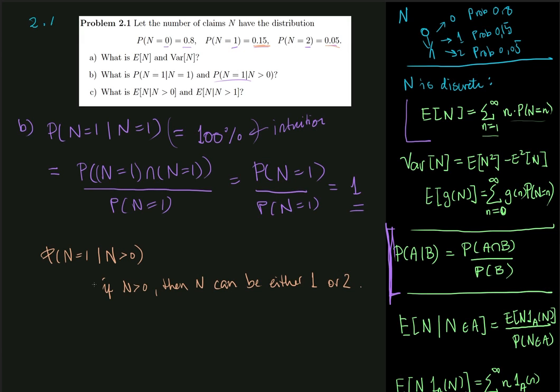But let's just try to do this mathematically. So the probability that N is equal to 1, given N is greater than 0, using the formula again, is given by the probability of the intersection of the two events divided by the probability of what we're conditioning on. And this is just equal to the probability of N being 1, because N equal to 1 is an event that's included inside the event that N is greater than 0. And we divide this by the probability that N is greater than 0.